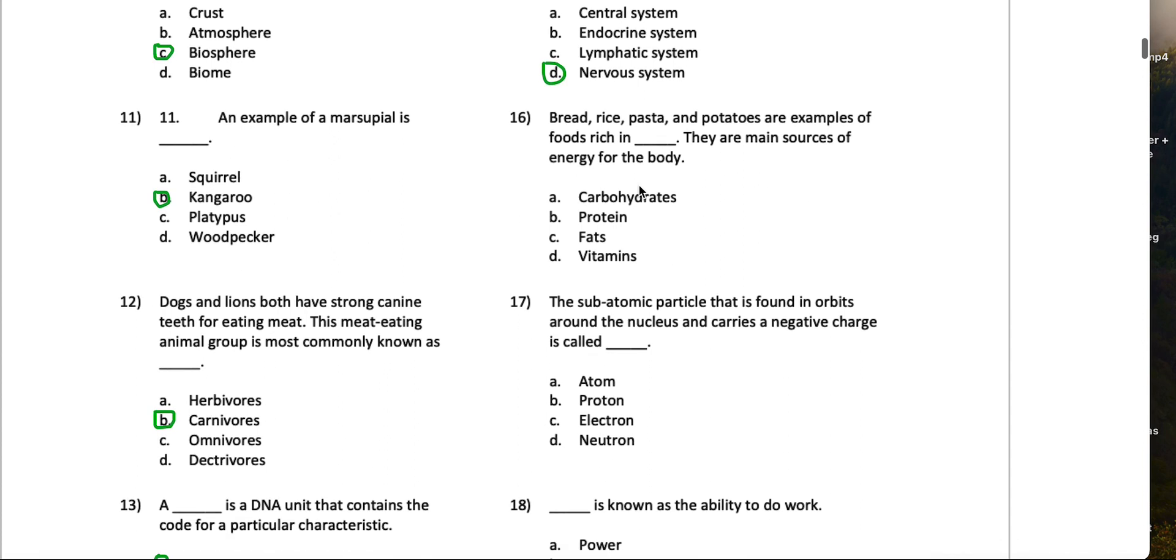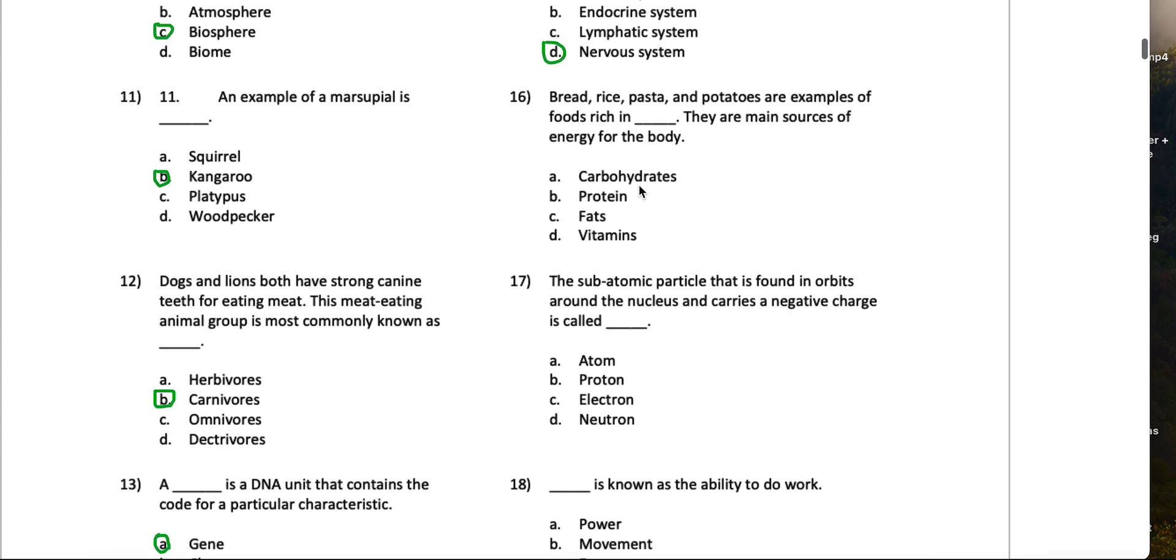16, bread, rice, pasta, and potatoes are examples of foods rich in blank. They are main sources of energy for the body. I'd say carbohydrates.